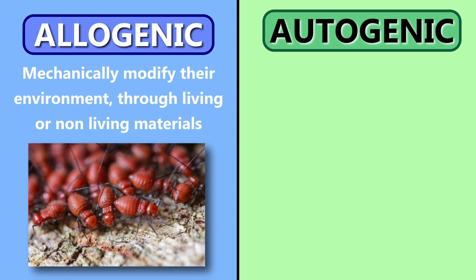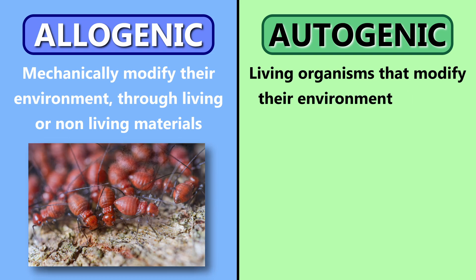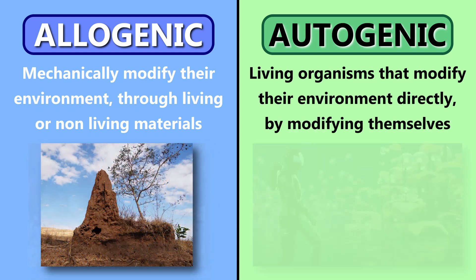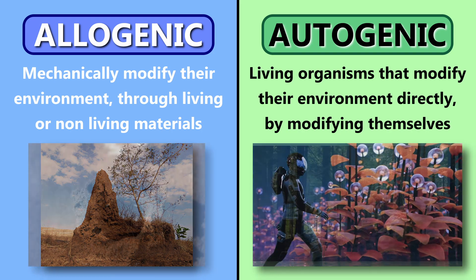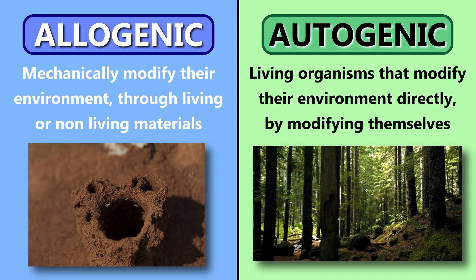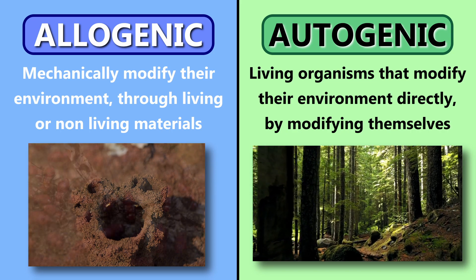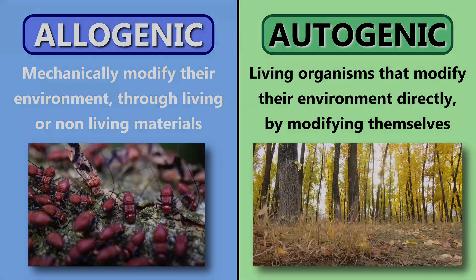On the other hand, autogenic engineers are living organisms that modify their environment directly by modifying themselves. That kind of sounds like fantasy or sci-fi material at first, but just think of trees. As they grow, their trunks, branches and leaves will create new habitats for countless other species, and additionally their roots will alter the water flow pattern in the ground. Now let's explore some examples of ecosystem engineers that showcase their remarkable abilities.